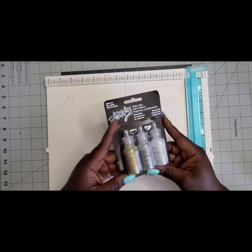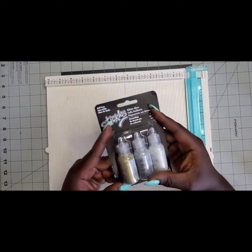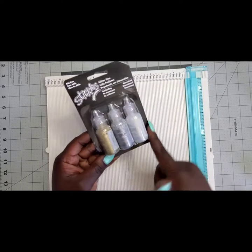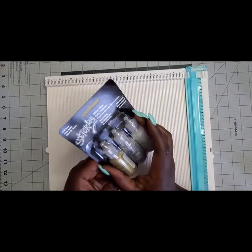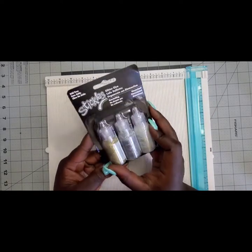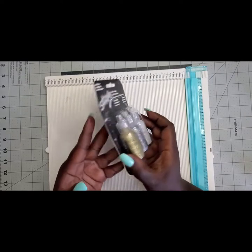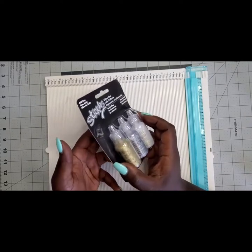All right, so we're going to work on some acetate packaging, and what I mean by that is like the things that you see in the stores that we shop in for craft supplies or for anything pretty much. You see how it has like this cardboard piece and then it has this acetate covering, but you can see the item that you're looking at.